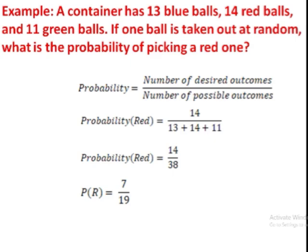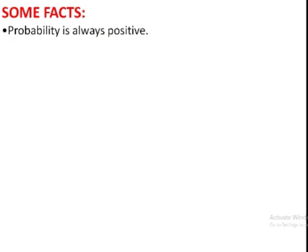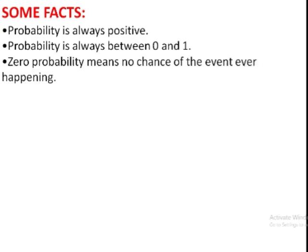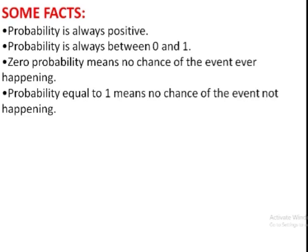Let's do another one. But first, we should go through some interesting probability facts. First, probability is always positive. It can never be negative. Probability is always between 0 and 1. When the probability is 0, it means there is no chance of that event ever happening. And when the probability is 1, it means there is 100% chance that something will happen.